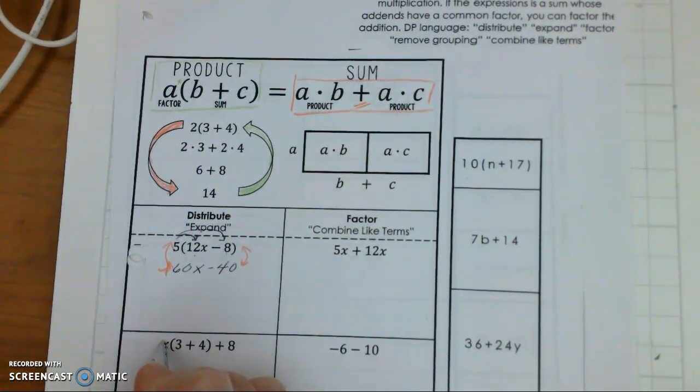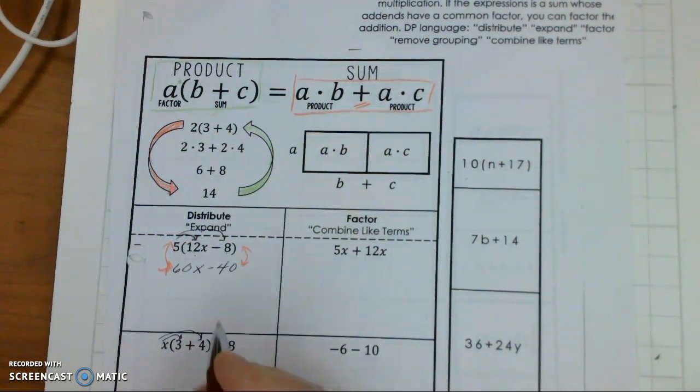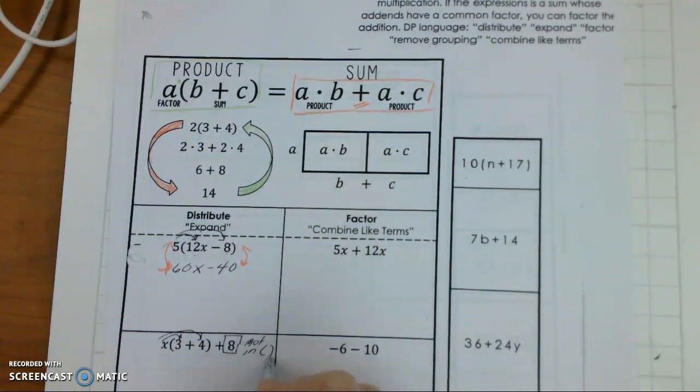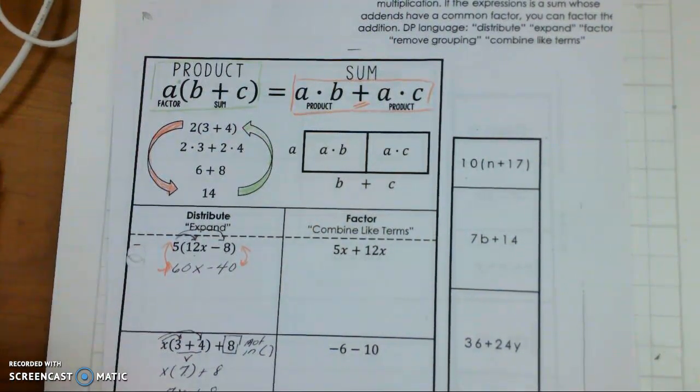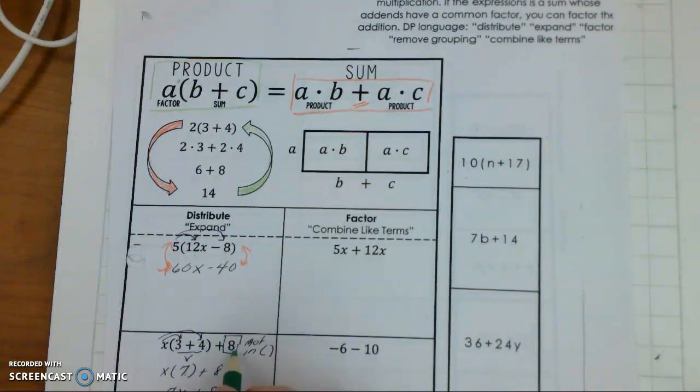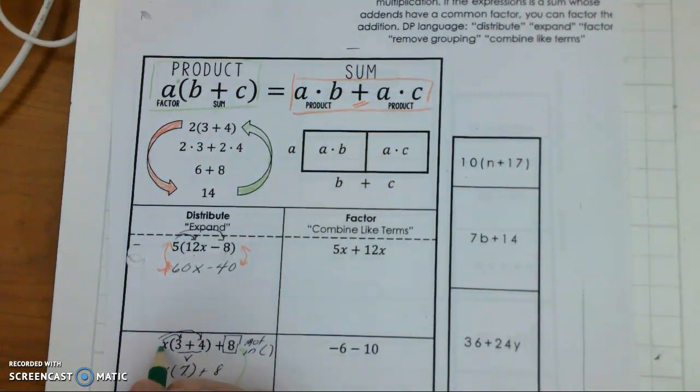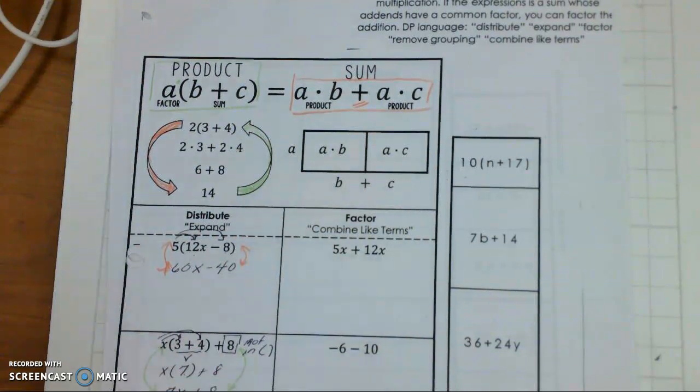Now the next one, x times 3, x times 4, plus 8. Now this is not in parentheses. So the first thing we do is remember your order of operations. Because they are like terms. You are going to change that to 7, plus 8. Then we are going to multiply 7x, plus 8. So now these, I am just going to be using different colors. So this and this are equivalent expressions.